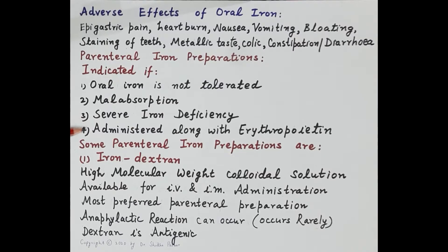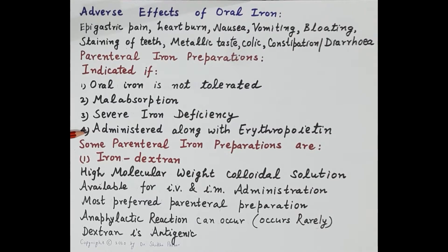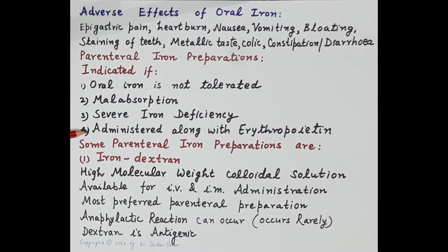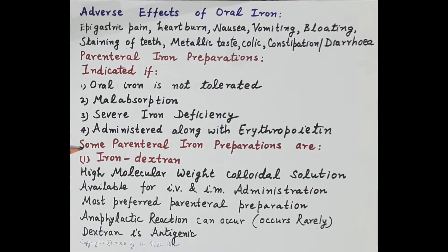Parenteral iron is also preferred in severe iron deficiency — for example, due to excessive bleeding — and it is administered along with erythropoietin. Erythropoietin is a hormone produced by the kidney that induces rapid erythropoiesis, which increases iron demand; therefore, iron supplements are given alongside it. One of the most common parenteral preparations is iron dextran.